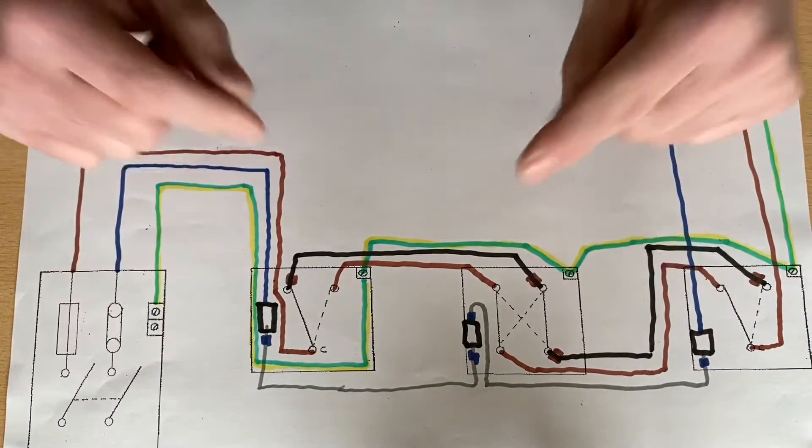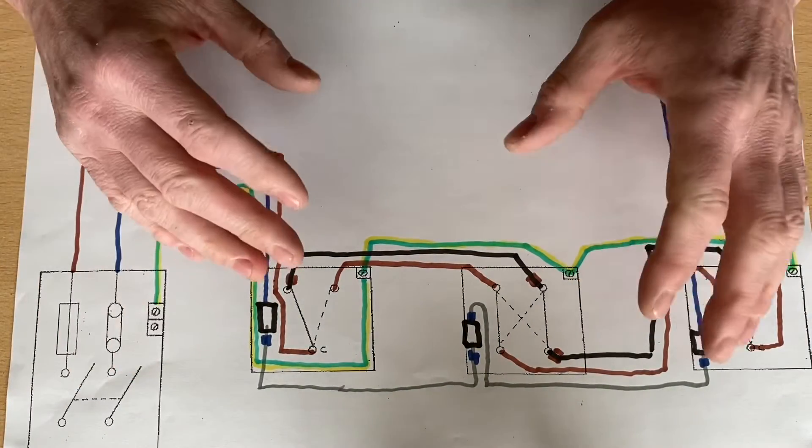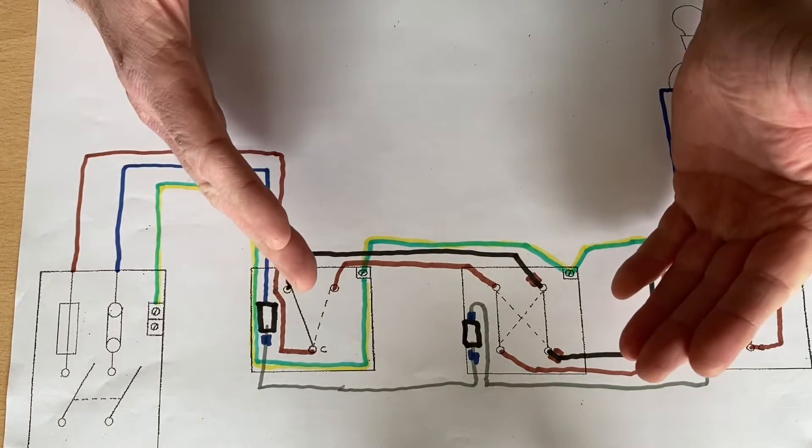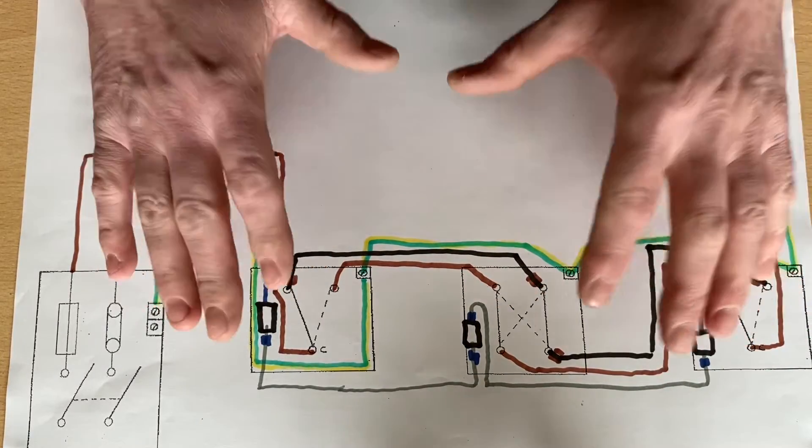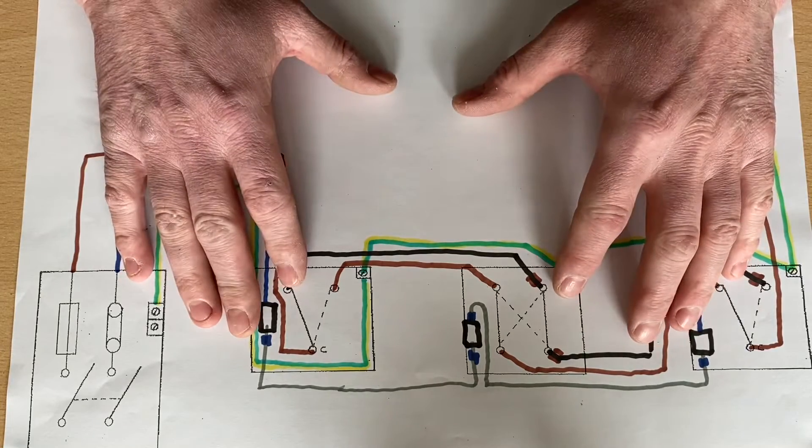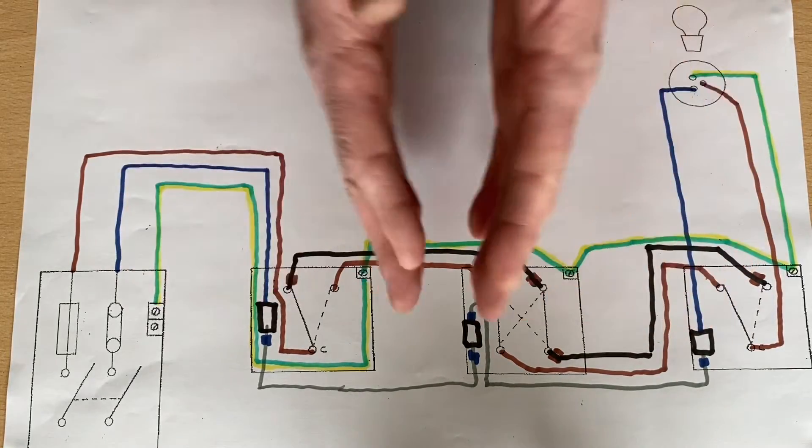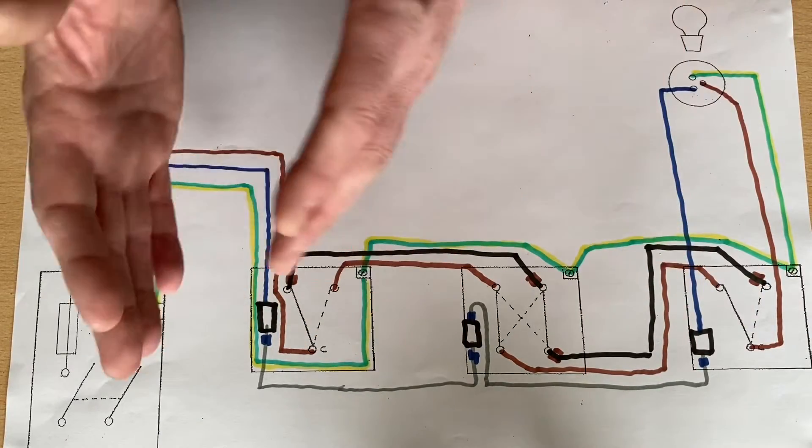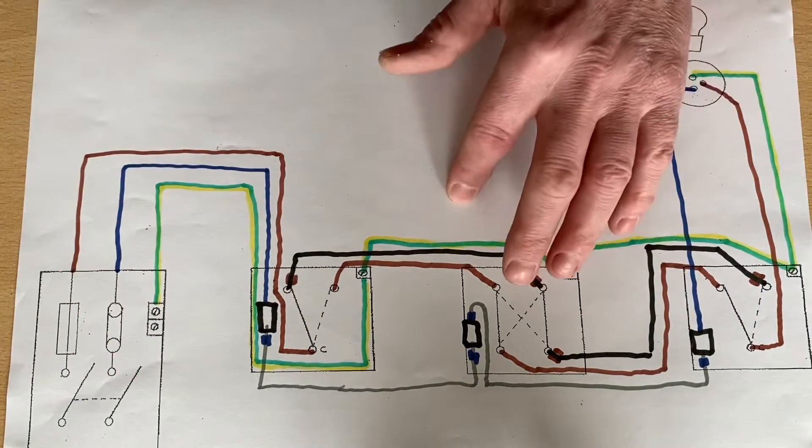Continuing on my wiring diagram series, we've looked at the three plate method, the two plate method, often called taking the feed to the switch. Then I came across this method after a conversation with a gentleman doing his AM2 assessment. He'd gone on in his pre-planning days, which I always recommend you do pre the assessment itself, and he was shown the following wiring diagram.